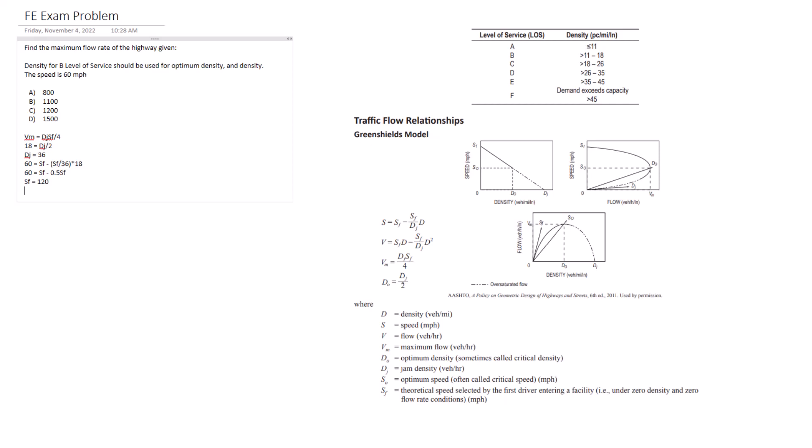So we have that as 120. Now we can find the max volume equals the jam density, we found that to be 36, times 120. And then we're going to divide that entire thing by four, and that equals 1080 for the flow rate.